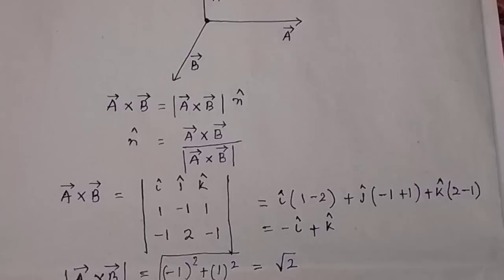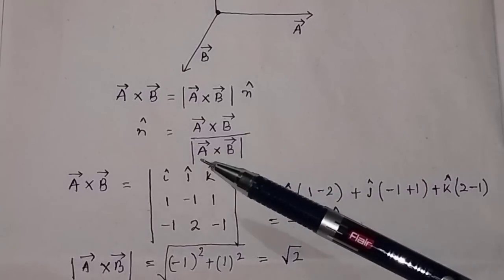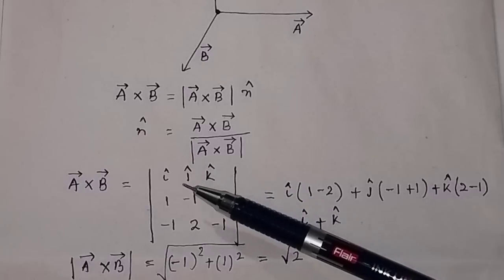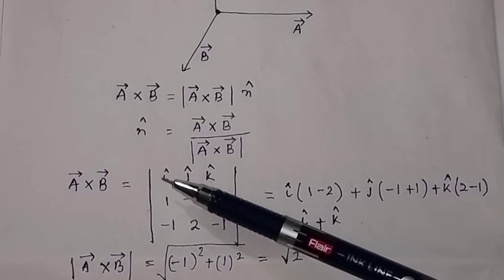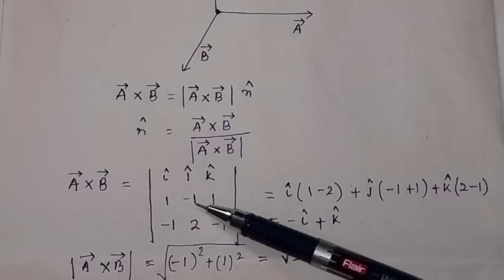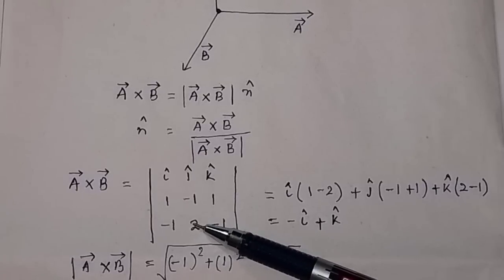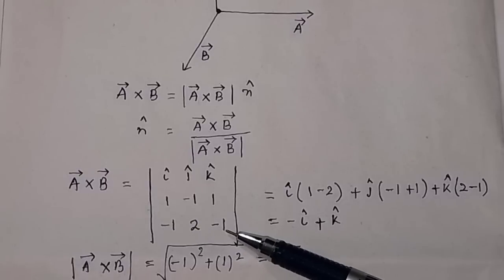The two vectors are a and b. Vector a is i-cap minus j-cap plus k-cap, so you write a×b as the determinant of i, j, k with row 1, minus 1, 1. And vector b is minus i-cap plus 2j-cap minus k-cap, so you write minus 1, 2, minus 1.